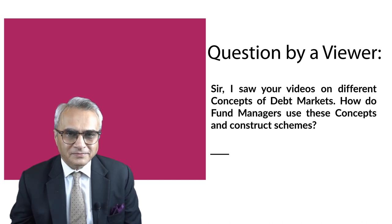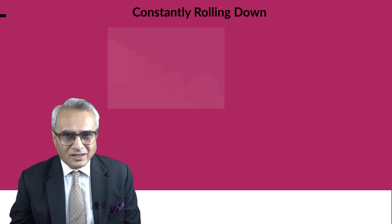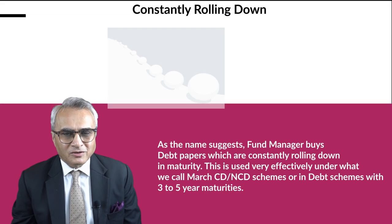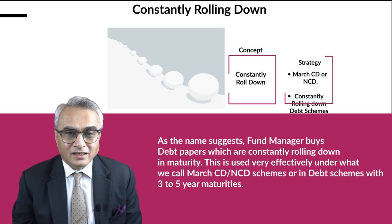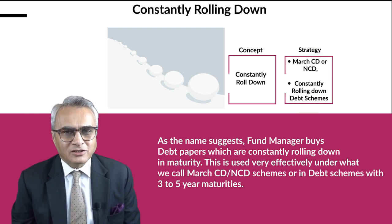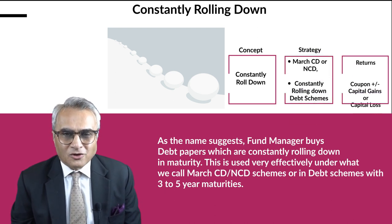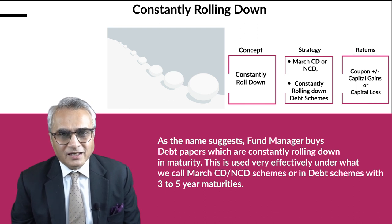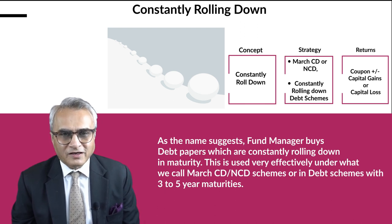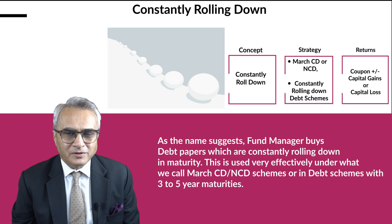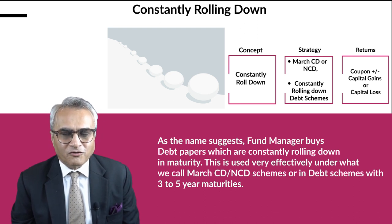Constantly rolling down — I have spoken about this in an earlier episode. It is used very effectively in what we call the March CD or NCD concept, or in a constantly rolling down product which starts with a 10-year or 5-year maturity, buying those papers and constantly buying residual maturity papers going forward.